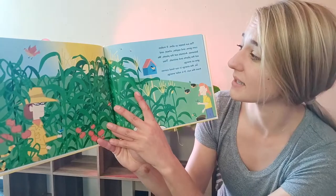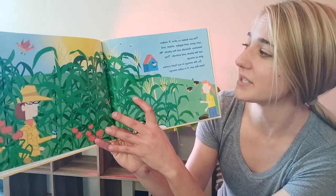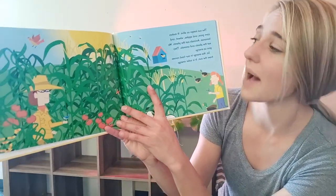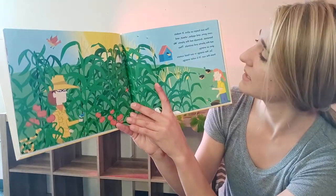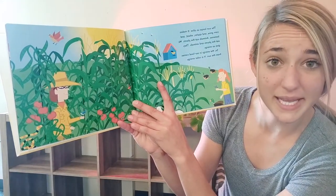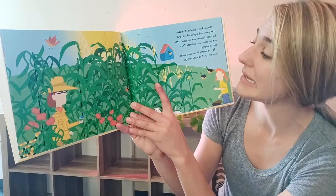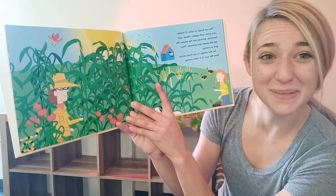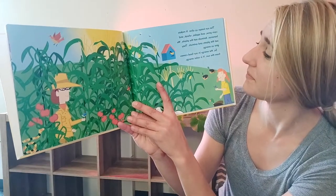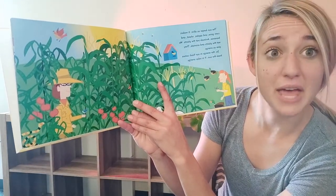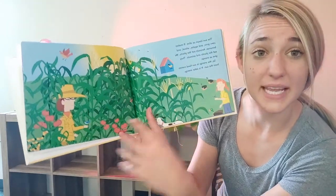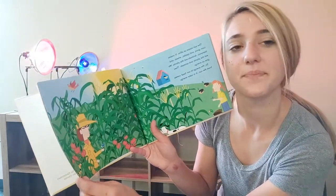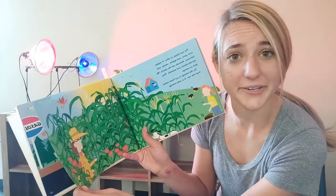The sun keeps us alive. It makes plants grow like corn and apples and wheat and bananas. And animals eat those plants. Then we eat the plants and animals. They give us energy. So the energy in our food comes from the sun. It is called solar energy. Can everyone say solar energy?